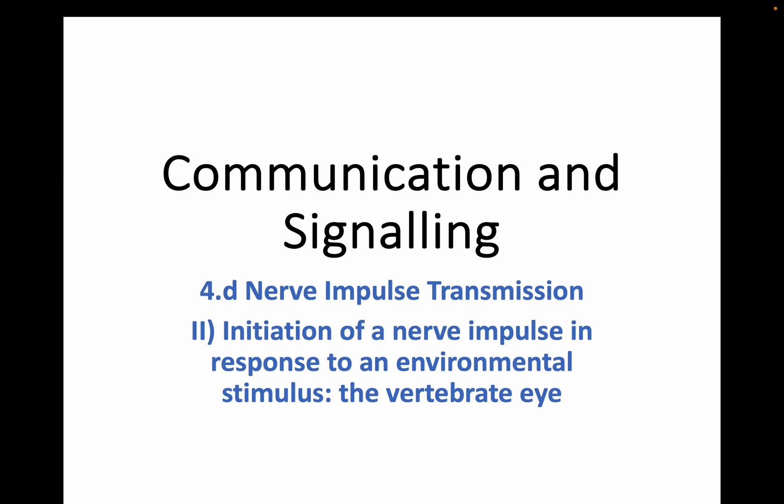Hi everyone and welcome back to Advanced Higher Biology. Today we're continuing with Unit 1, Cells and Proteins, and we're finally going to finish off Key Area 4, Communication and Signalling. We were on part D, which was Nerve Impulse Transmission, and in part 1 we looked at the generation of the nerve impulse. Today we're going to finish this off by looking at the initiation of nerve impulses in response to environmental stimuli. This could be a good 4-mark question or something to add into an extended answer.